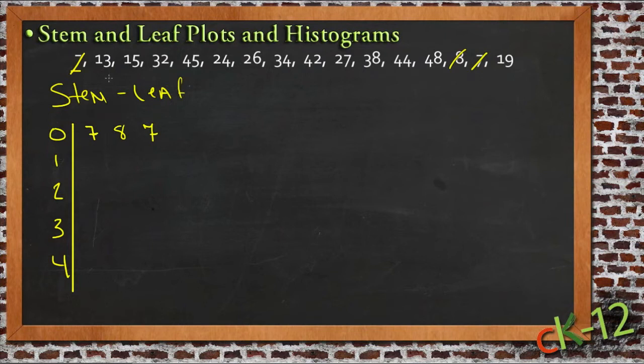And then where the tens column is 1, we have the number 13. So we leave the 1 on the left. It shows the 10 over there, and we just put the 3 from the 13 on the right. And we do the same thing with the 15 and then that looks like the 19.